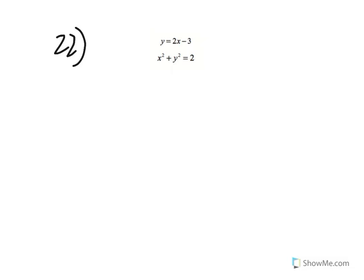Question 22 is asking you to solve the simultaneous equations. There are two ways of solving it: elimination or substitution. I'm going to use substitution.